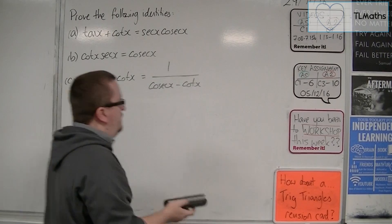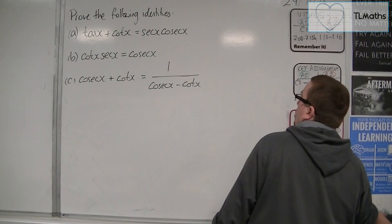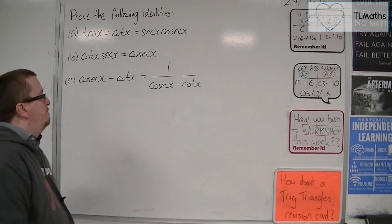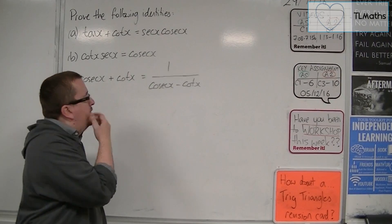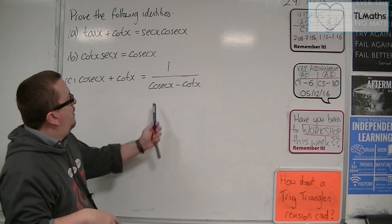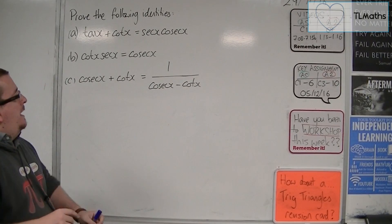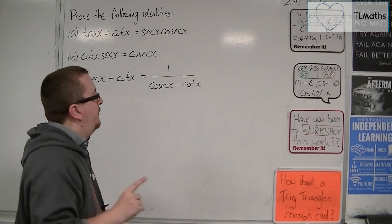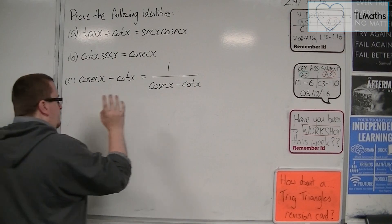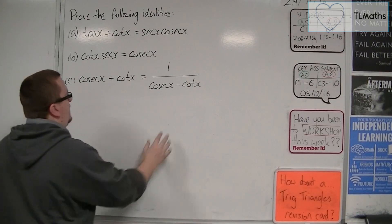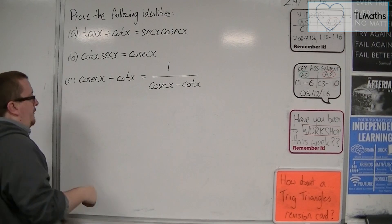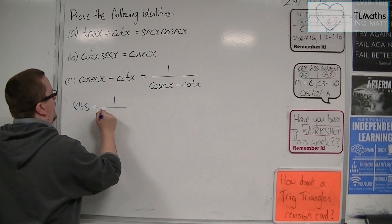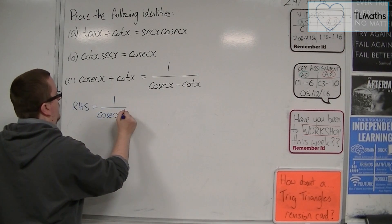So with the third one, we've got cosec plus cot is equal to one over cosec minus cot. Now it looks very tempting to multiply both sides by the cosec minus cot and you get an identity. But we can't do that, remember. We can't cross the streams. So we're going to deal with the most complicated-looking side. And that's the right-hand side this time. So the right-hand side is equal to one over cosec minus cot.